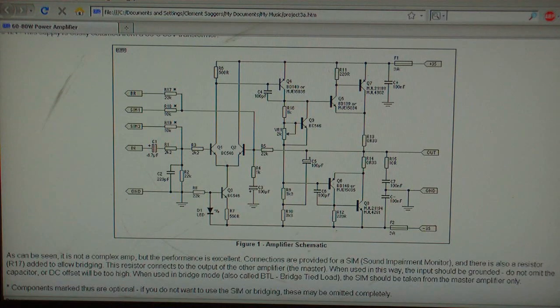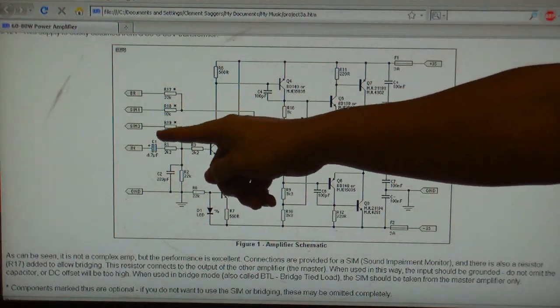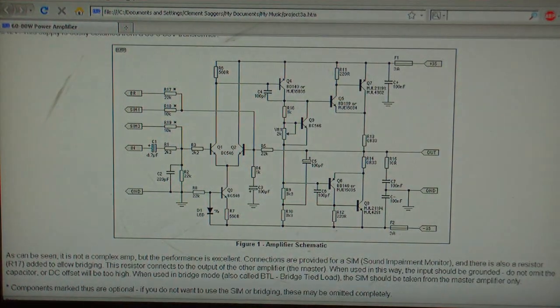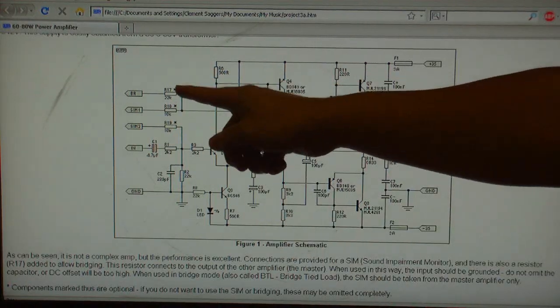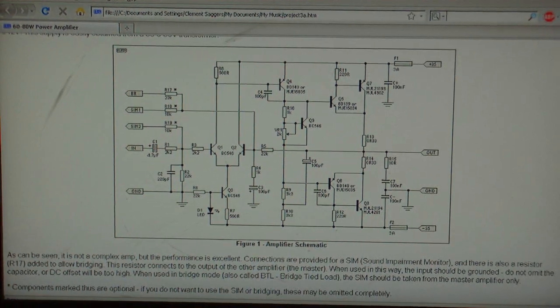Here's the actual schematic of the amplifier. Now, I don't know how many of you might have come across this particular circuit in your internet travels. As you can see, it's got connections for bridging, and sound impairment monitor, whatever the hell that is. But it states here that these components are optional, you don't need to put them in, and I'm not going to use them.